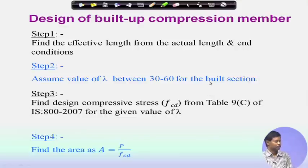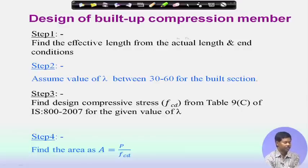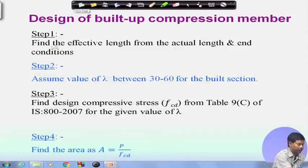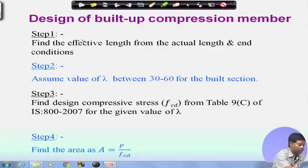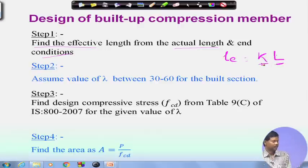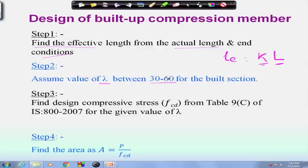Now, coming to the design of built-up compression members. The first step is to find the effective length Le from the actual length and end conditions. Then we assume a slenderness ratio lambda of 30 to 60 for built-up sections. We consider a lower value of lambda because the radius of gyration of built-up sections is quite high, so a slenderness ratio of 30 to 60 is sufficient.